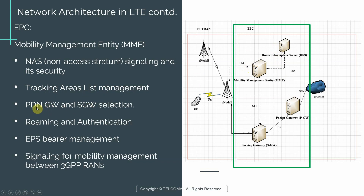PDN gateway selection and SGW selection also happen via the MME. When a subscriber attaches, the MME uses certain logic to figure out which SGW and which PDN gateway the subscriber will attach to. In a production network, you would have more than one of these boxes, and you want to distribute traffic for redundancy and load balancing purposes.